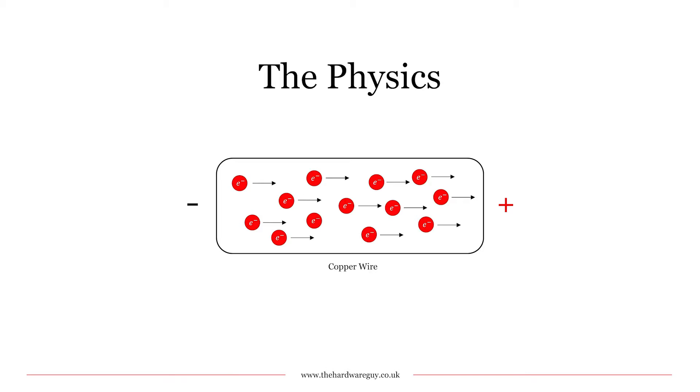Copper wire is used because it's a very good conductor of electricity. This is because it contains free electrons. The movement of these free electrons causes a transfer of energy throughout the circuit, and this is what we define as current flow.